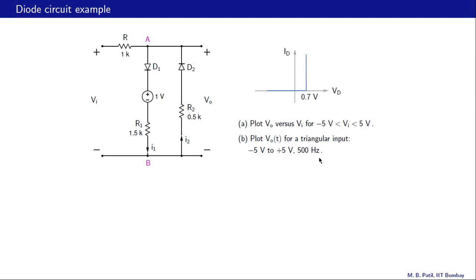The diode model we will use is the same as the previous example: if the diode conducts, the voltage across it is a constant 0.7 volts, and if the voltage is less than 0.7 volts, the diode does not conduct.